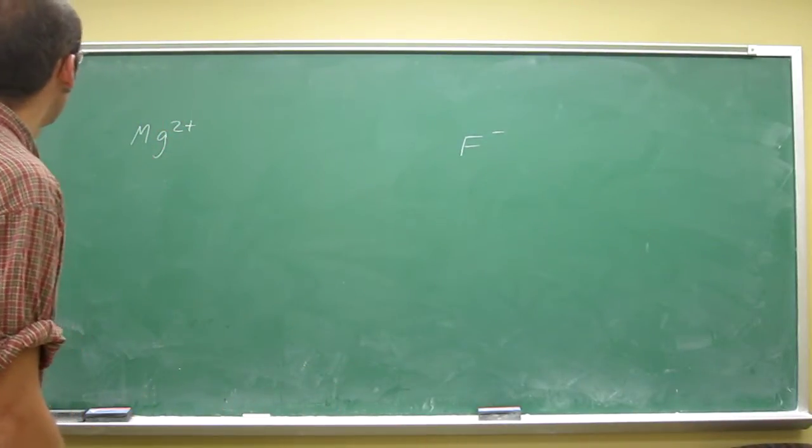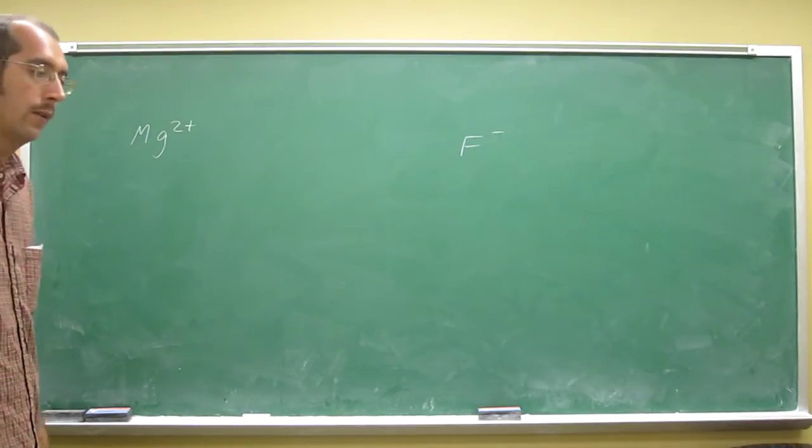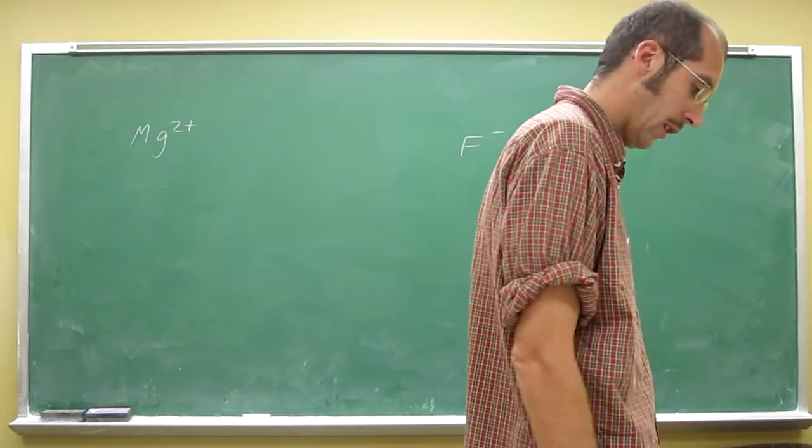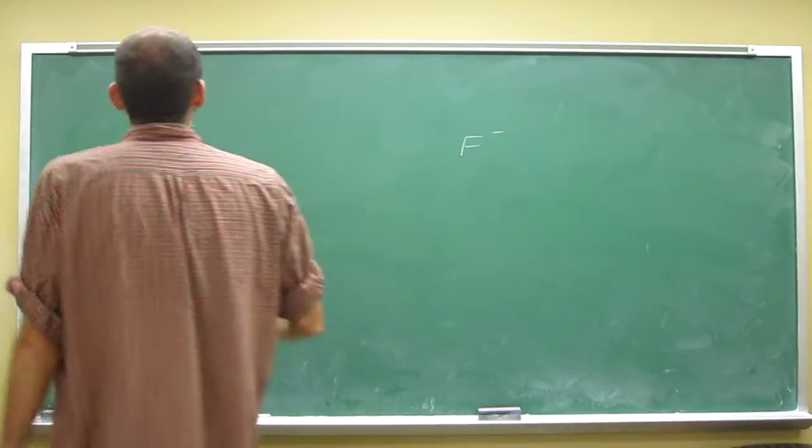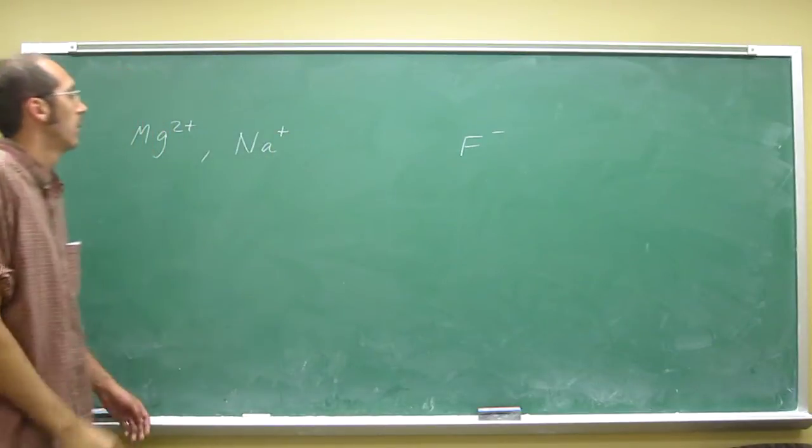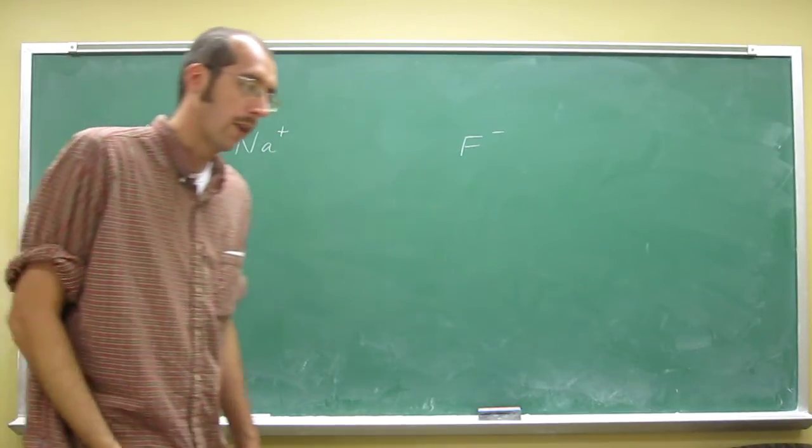So in the case of Mg2+, for me, I guess I would write its nearest neighbor, which is Na+. But there's other ones you could write.